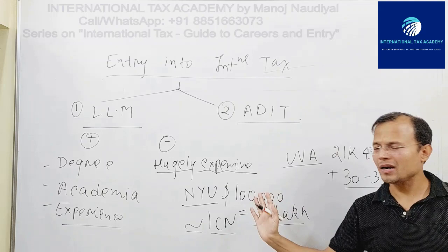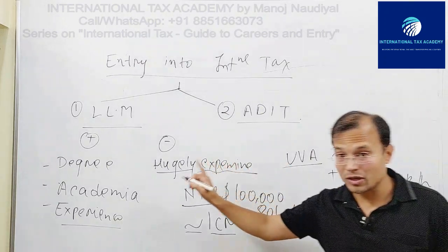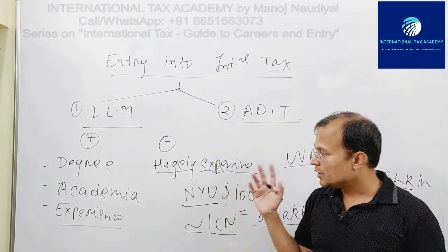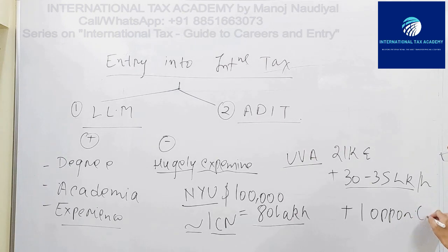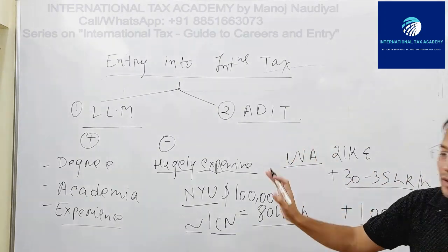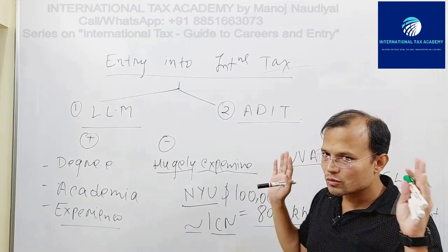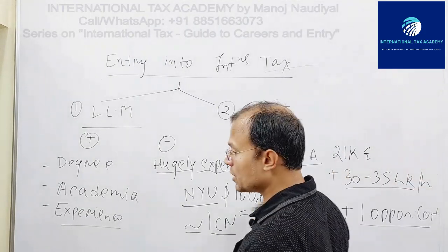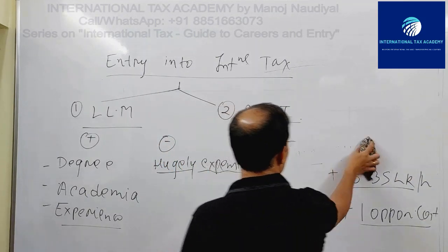The University of Amsterdam's program at 21,000 euros plus living expenses would come to a minimum of 30 to 35 lakhs. So the top bracket is around 1 crore and the minimum is 30–40 lakhs. If you are already working, you also need to factor in one year of opportunity cost, since these are full-time programs requiring a break. In any case, the minimum out-of-pocket expense would be at least 40 lakhs. For Indians, this is very expensive — and that is the biggest con.